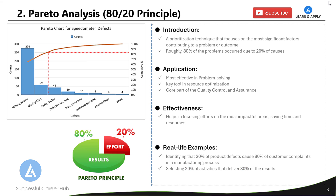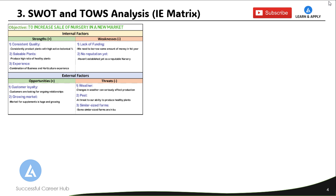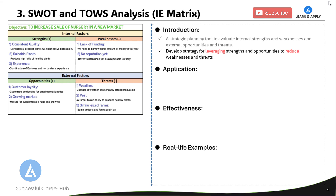Now let's go to the third decision making tool, which is SWOT and TOES analysis, also called the internal-external matrix. As the name indicates, it is a strategic planning tool used to evaluate internal strengths and weaknesses, and external opportunities and threats. We conduct the SWOT analysis and then continue with TOES analysis to develop a strategy for leveraging strengths and opportunities to reduce weaknesses and threats.